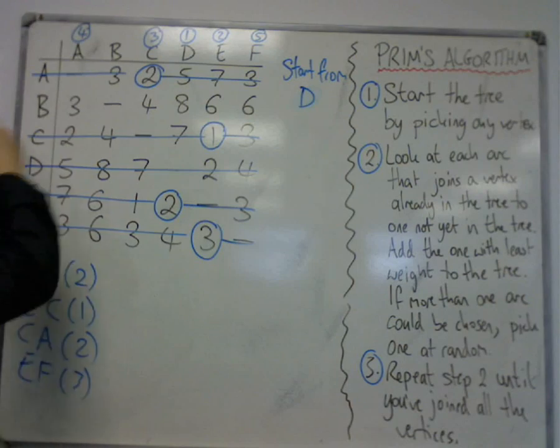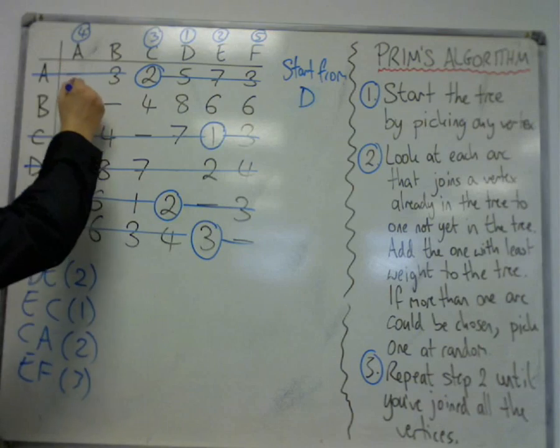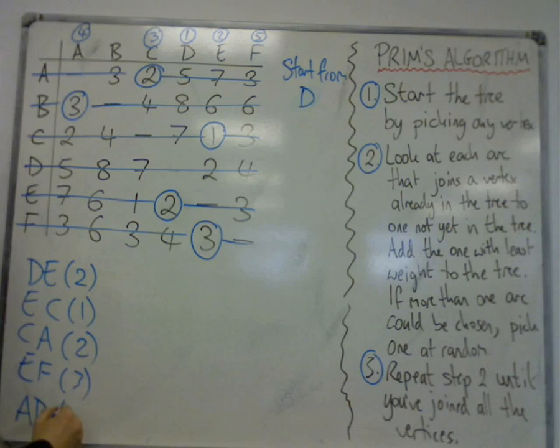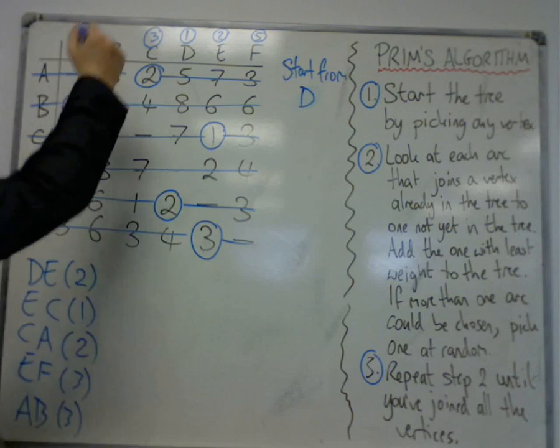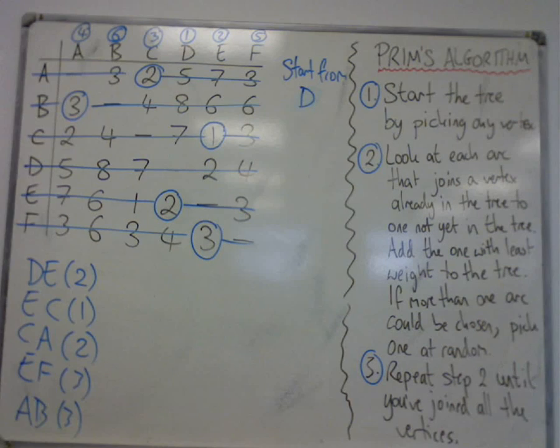So I'm now looking at 3, 4, 8, 6, and 6. The shortest one of those is the 3, so that connects A to B. So B is the last one to be connected. Right, number six circled, making sure they're circled at the top.